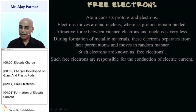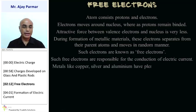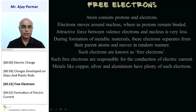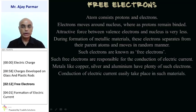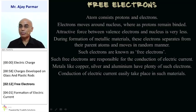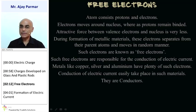Free electrons are responsible for the conduction of electric current. All metals, especially like copper, silver, and aluminium, have a large number of such free electrons, and because of that, they can conduct electricity very easily. Electric current can be conducted very easily in materials like copper, silver, and aluminium. Hence, they are called electrical conductors.